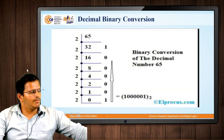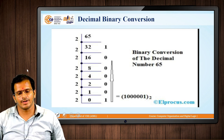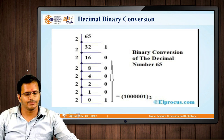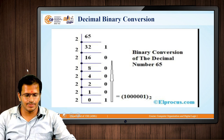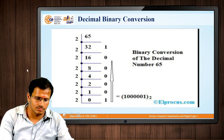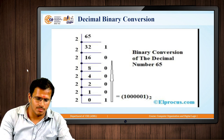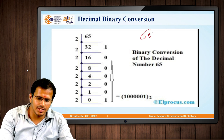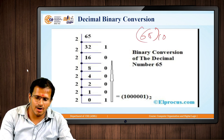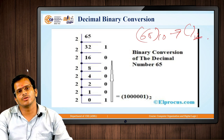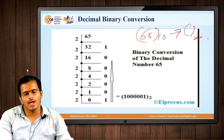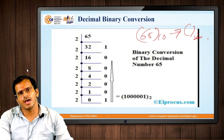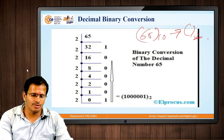First, we will be looking at how the decimal number is converted into binary. Consider the example of the number 65. 65 is the decimal number that we have to convert into binary. The division process is followed — 65 is taken, and we divide: 2 into 32 is 64, so the remainder value is 1.